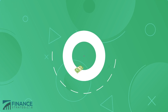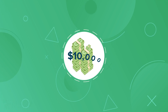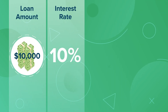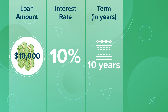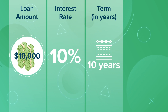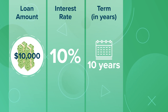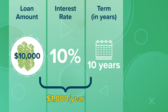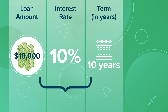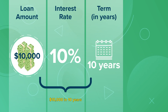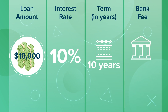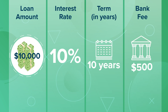As an example, let's say that you were to take out a loan of $10,000 at 10% interest, with a term of 10 years, which will be paid back at the end of the term. That would make your annual interest expenses $1,000 per year, which, over 10 years, is a total of $10,000 in interest paid. Let's also assume your bank has included fees associated with the loan, totaling $500.